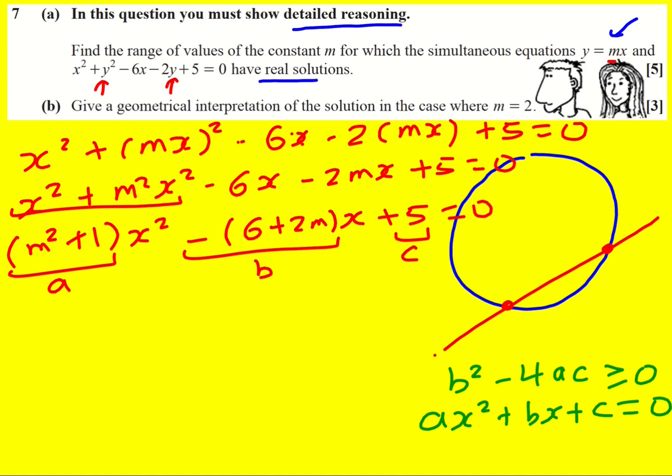Okay here goes. We're going to square minus 6 plus 2m. In fact when you square a negative it's the same as squaring the equivalent positive. So I'm just going to write 6 plus 2m squared minus 4 times a, m squared plus 1, times c, 5, greater or equal to 0.